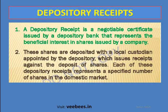A depository bank issues a negotiable certificate called a depository receipt. The shares are deposited with a local custodian appointed by the depository. This custodian holds the shares and the depository issues receipts against the deposit. Each depository receipt represents a specific number of shares in the domestic market.